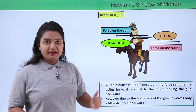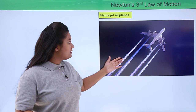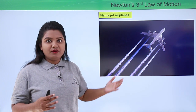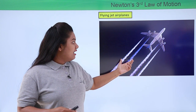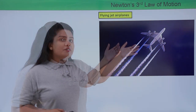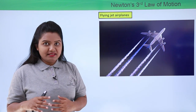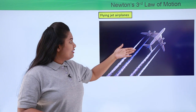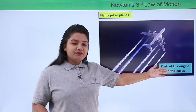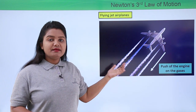Now let us move to our second application: flying jet airplanes. You might have noticed airplanes in the sky, and we have also seen gases coming out of the airplane which trace the path it has taken. These gases are produced by the rapid burning of fuel inside the airplane and are pushed outwards or backwards with a large velocity. A force is exerted onto the gases by the engine, which makes them move in the backward direction.